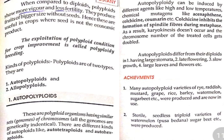Autopolyploids: these are polyploid organisms having a similar set of chromosomes — all the genomes are genetically identical. Examples include autotetraploid and autohexaploid. Autopolyploids can be induced by different agents like high or low temperature, or chemical mutagens like acenaphthene or colchicine. Colchicine inhibits the formation of spindle fibers during metaphase; as a result, karyokinesis does not occur and the chromosome number of the treated cell gets doubled. Autopolyploids differ from their diploid counterparts in having large stomata, late flowering, slow growth, and large leaves and flowers.